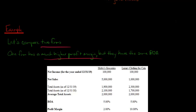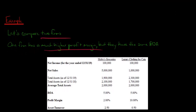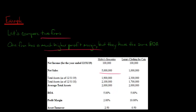So you might be wondering: how do they have the same return on assets if one company has a much higher profit margin? What is responsible for this? Well, what we have is very different asset turnovers. To get the asset turnover, we take the company's net sales and divide it by the average total assets. For Moby's Groceries, that would be $5 million divided by $2 million, which gives you an asset turnover of 2.5.